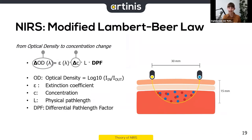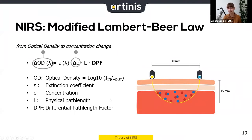The differential path length factor accounts for the scattering of light. What we want to know is the exact length light travels before returning to the receiver. This DPF depends on the type of tissue as well as age. For the brain it's usually around six, meaning light travels approximately six times the physical path length due to scattering.